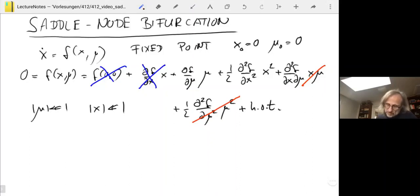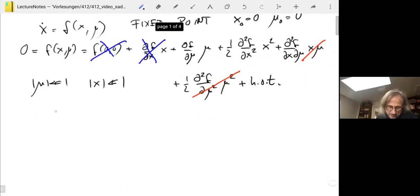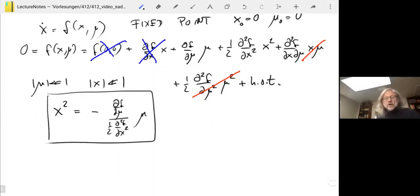Let's solve for it. Doing that, we solve for x. We get x squared equals minus df/dmu times mu divided by one half d²f/dx². So what we got is a nonlinear equation for x. Compare that to what we had before. When the implicit function theorem applied, we had simply that x is linear in mu.